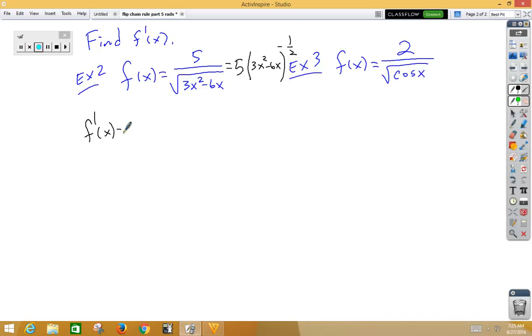So, f prime of x is equal to, we have the power rule, so negative 5 halves, 3x squared minus 6x to the negative 3 halves, multiply by the derivative of the inside, 6x squared minus 6.